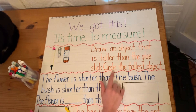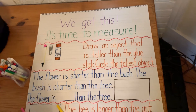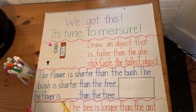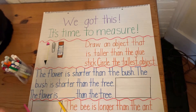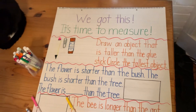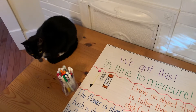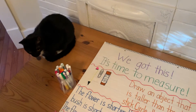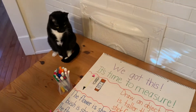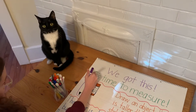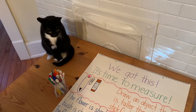Now let's read the rest of our directions. It says circle the tallest object. Which one do we already know is the tallest? Our directions asked us to draw an object that would be the tallest. The pencil is the tallest, so I'm going to circle the pencil. So I circled my tallest object.